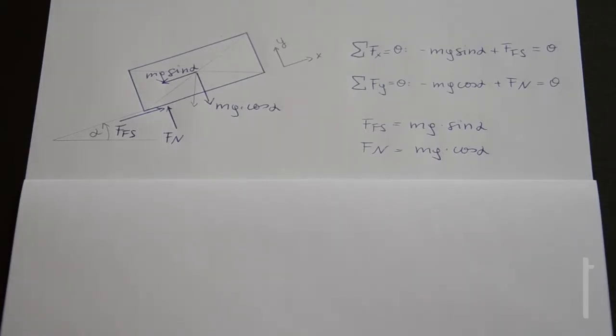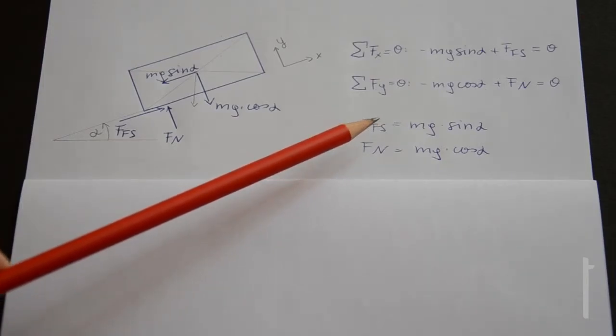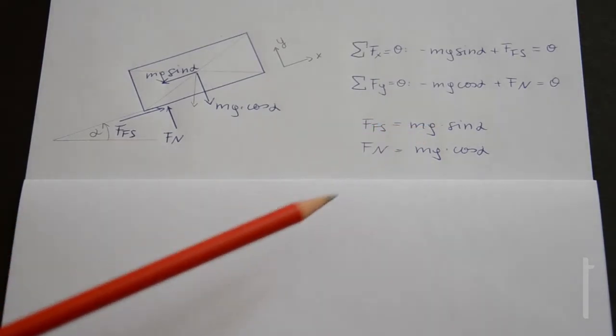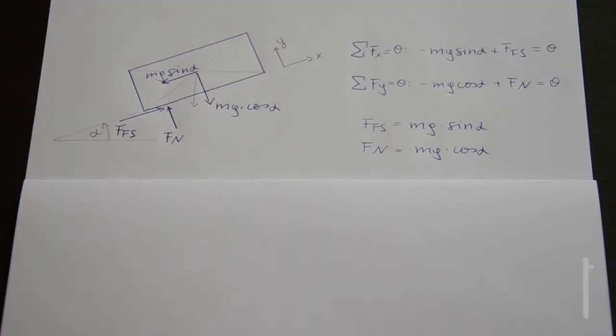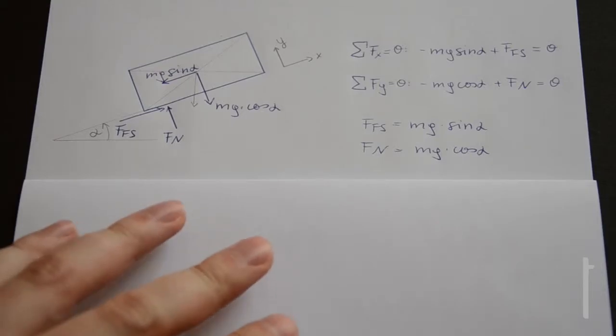After having found these components of mg, we can easily come up with the equations of equilibrium, which are sum of all forces in x direction equals zero. Remember, those forces pointing in the same direction as the positive counting direction of the x-axis need to have a positive sign. And the same goes for the y-axis. After solving these equations, we get the relationship for the force F friction static, which is mg times sin α, and the normal force Fn is mg times cos α. And now we can insert them into the equation of static friction.